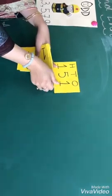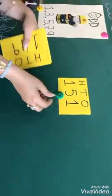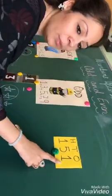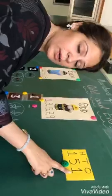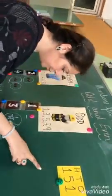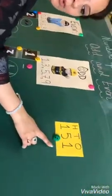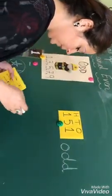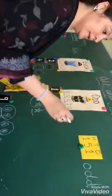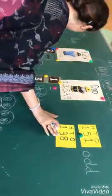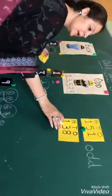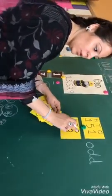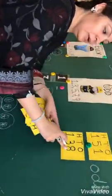Here we can see number 151. Is 151 an even or an odd number? We look at the one's position — that is number one. Since one is an odd number that stands alone, 151 is an odd number. Here is another example: 138.